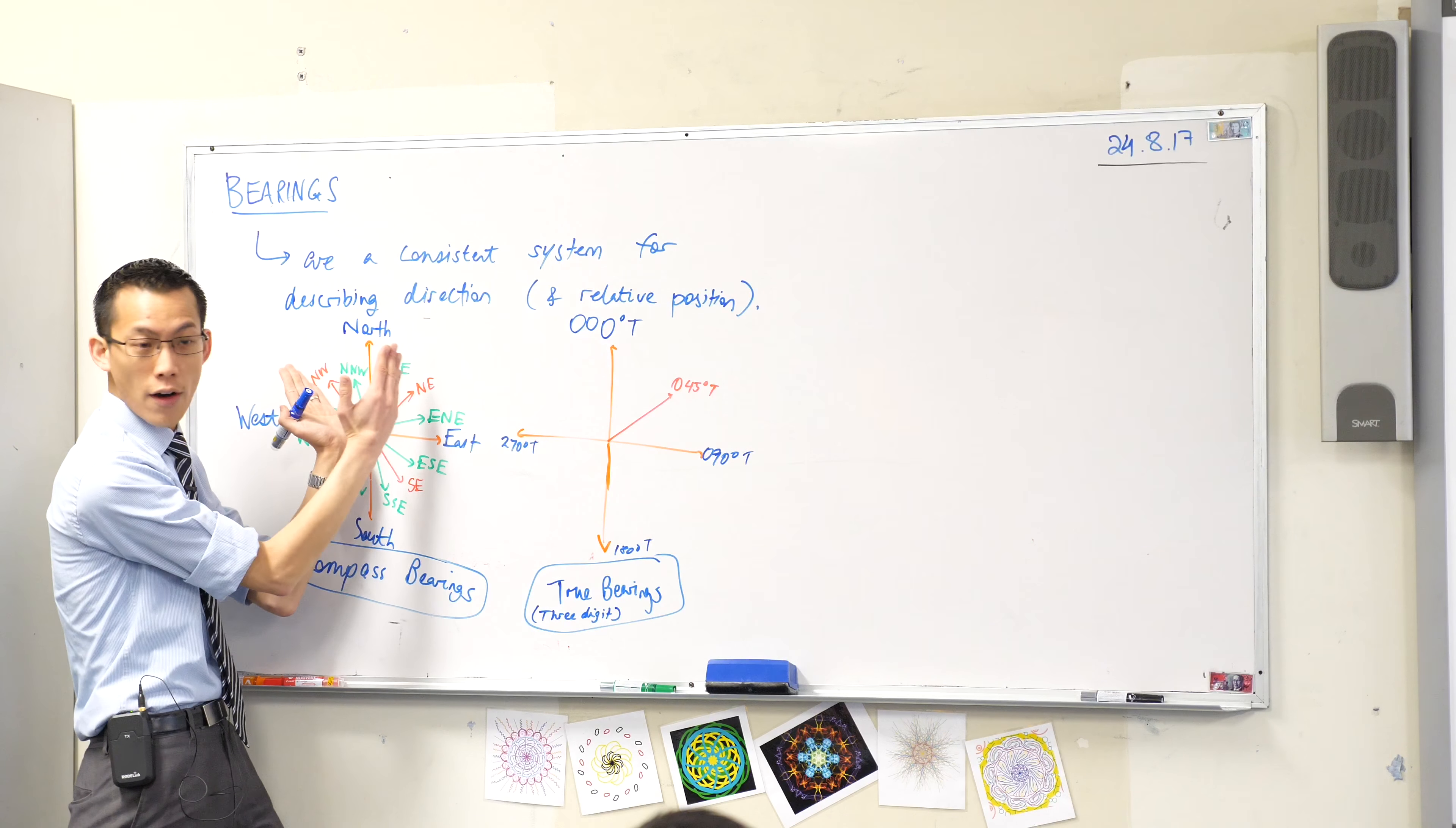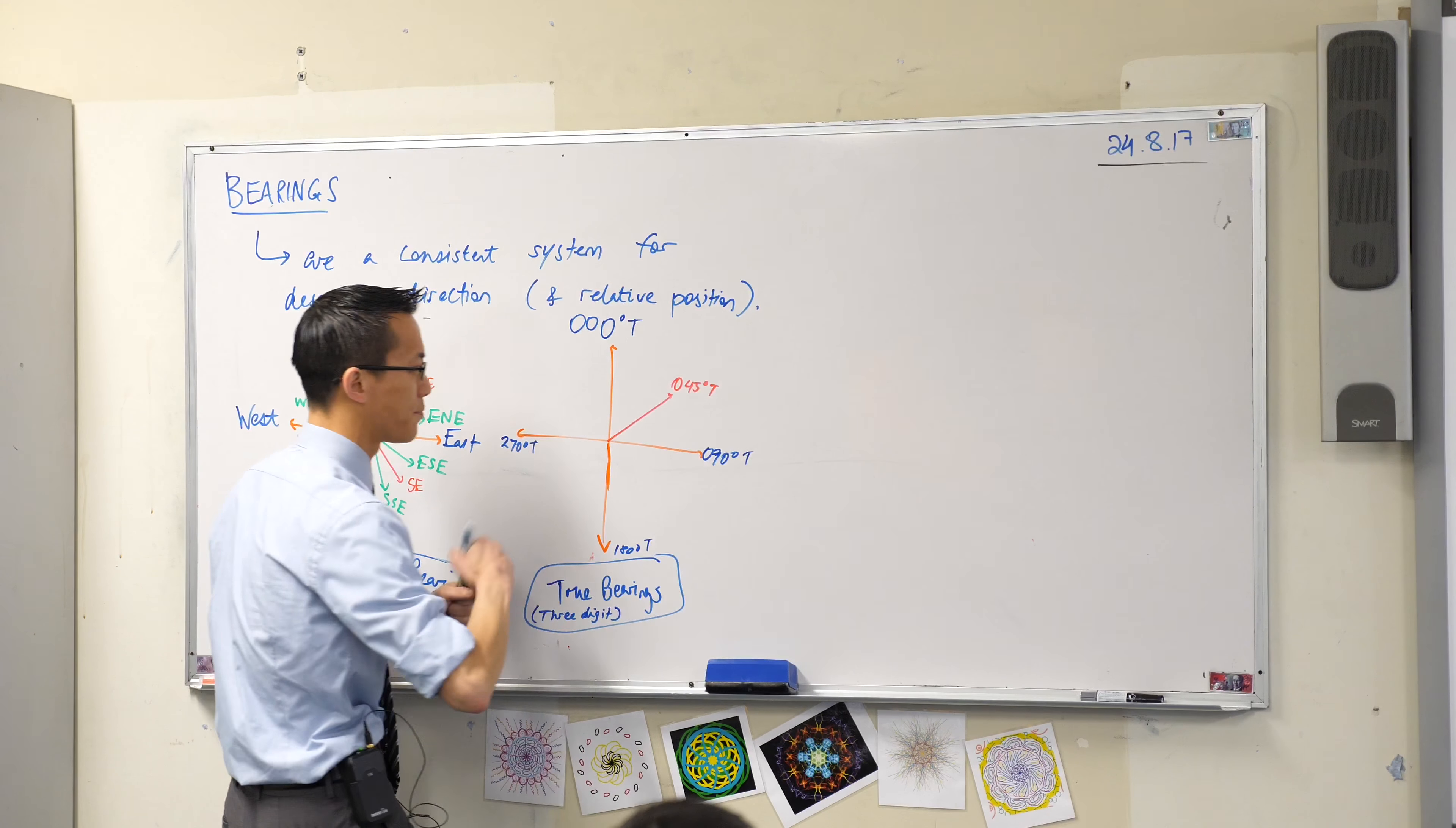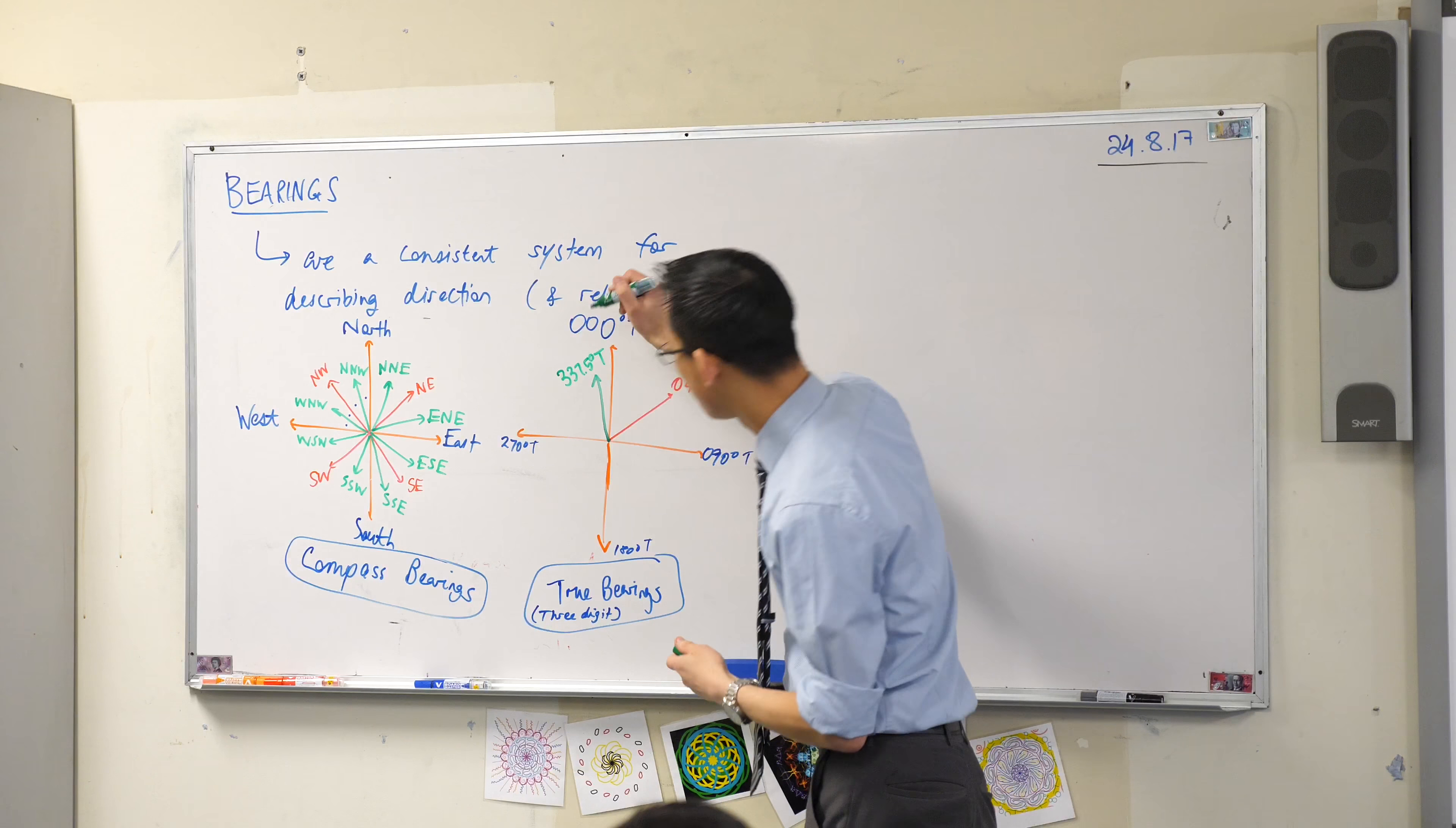So therefore if I go from north to northwest, that should be 45, and if I go again it would be 22.5. So each one of these—one, two, three, four—they're all 22.5 degrees. So if I wanted north northwest, north northwest should be 22.5 degrees short of the full revolution, which is 337.5.